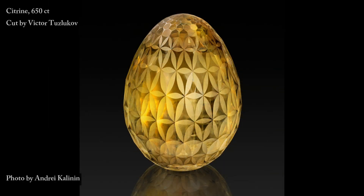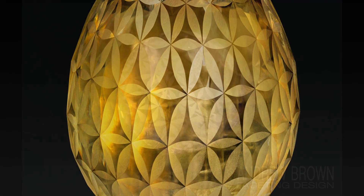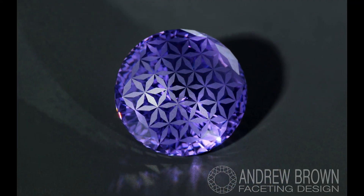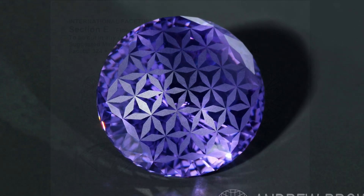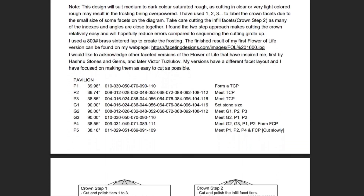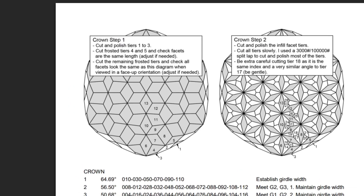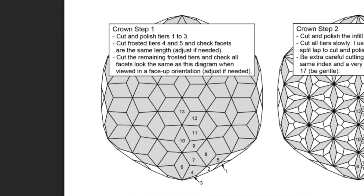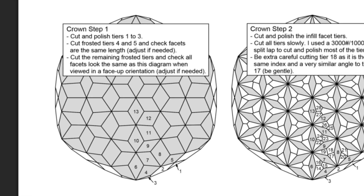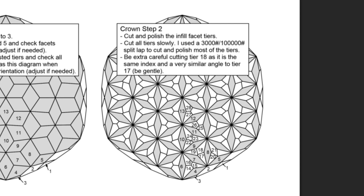I decided to make my own faceting diagram for it, using fractional indexes, so that the faceting could follow the original pattern more accurately. The faceting of this design is usually done in two parts. First, a pattern of rhombuses is prepared to serve as the basis for the final diagram. These rhombuses are left with a matte surface, unpolished. Then in the second part, small polished facets are added on the edges of the rhombuses to create the final Flower of Life design.